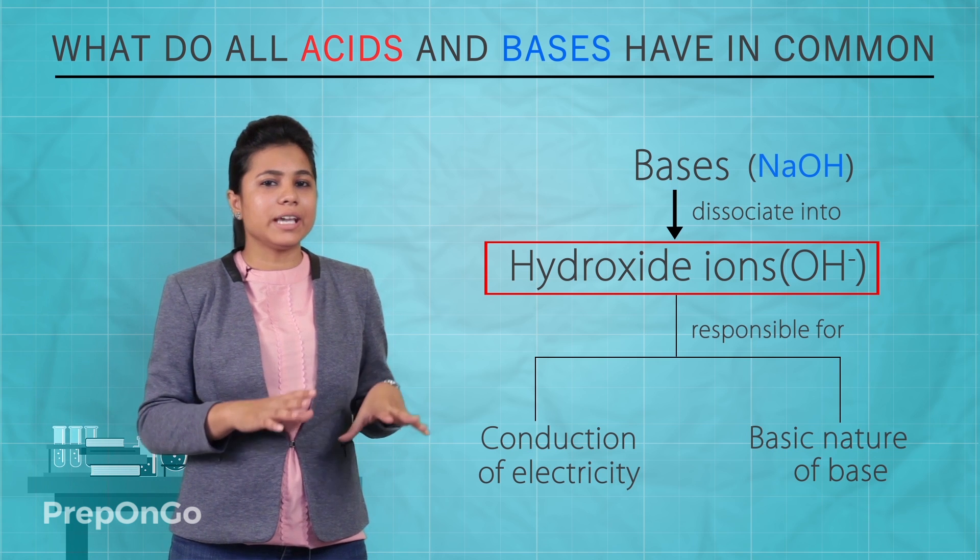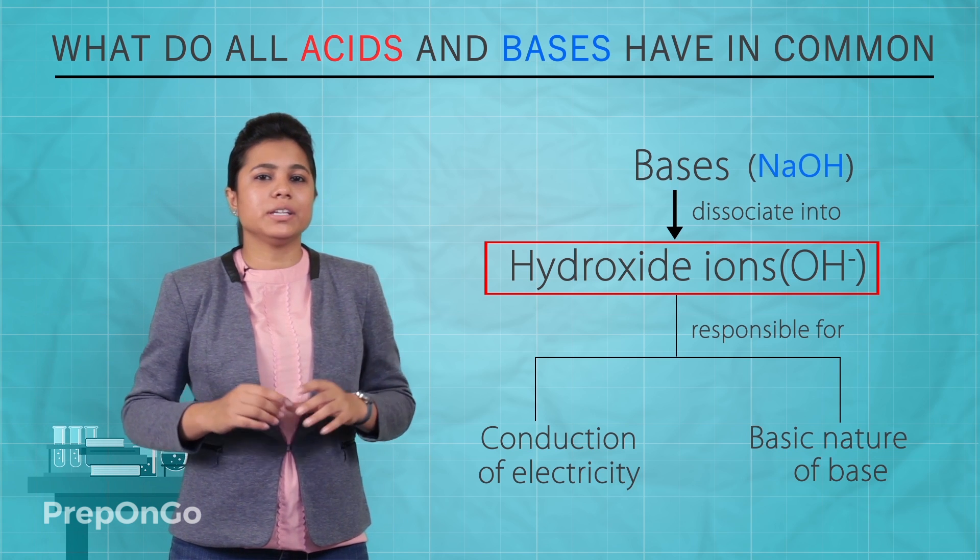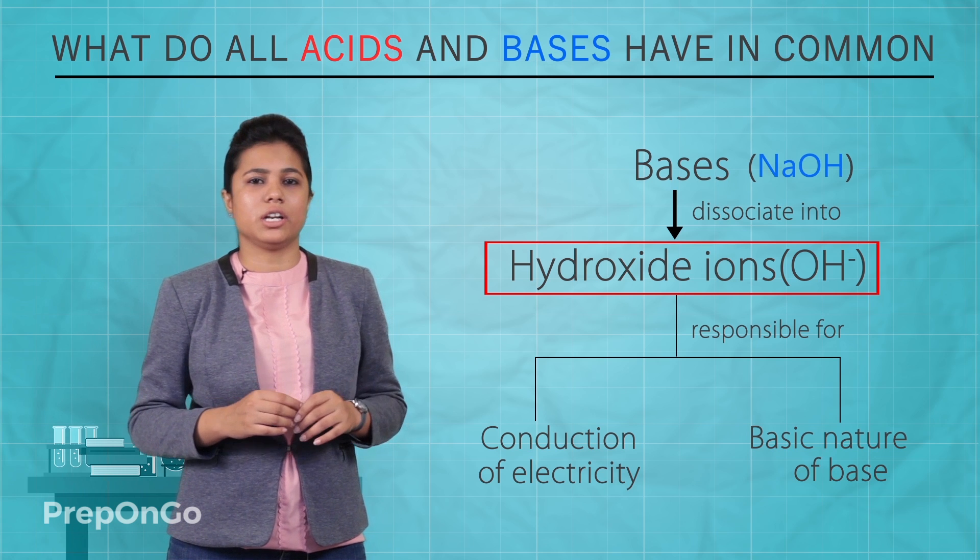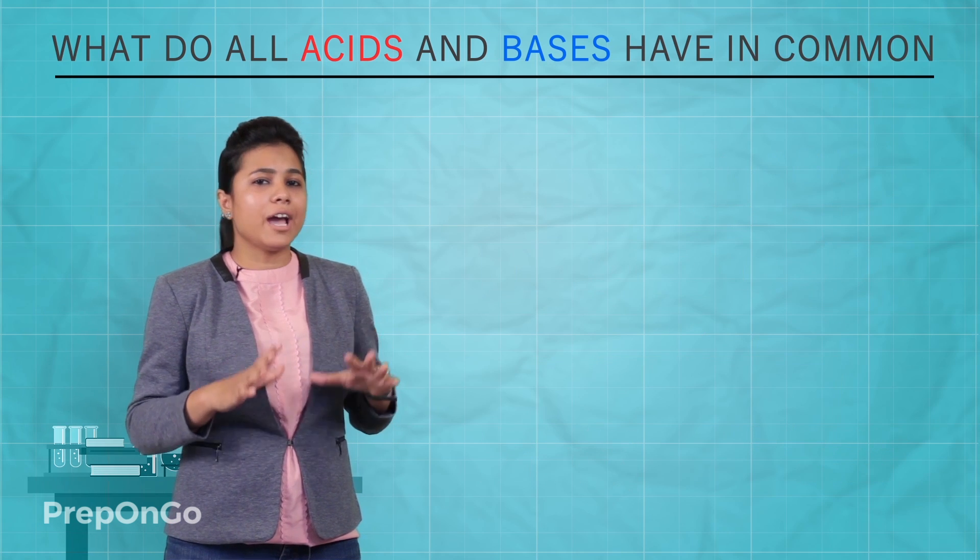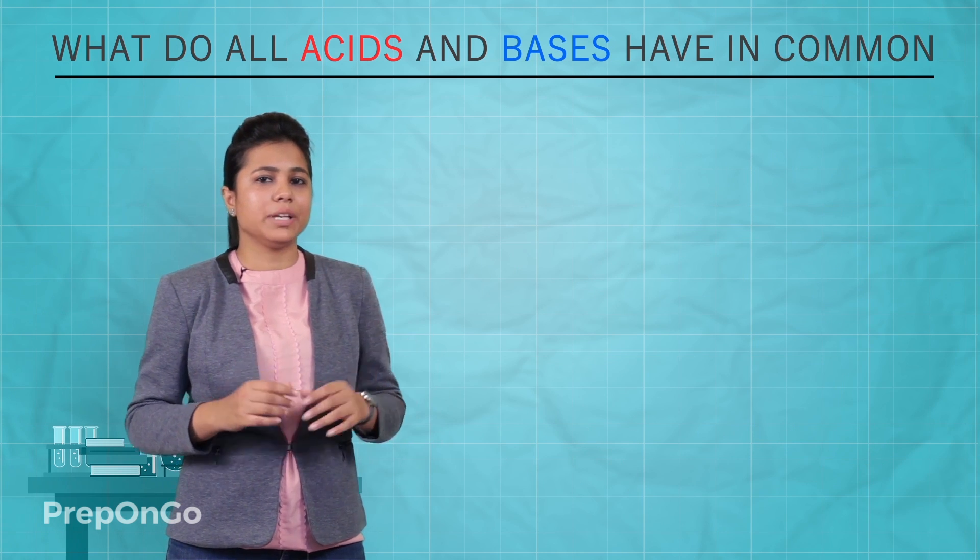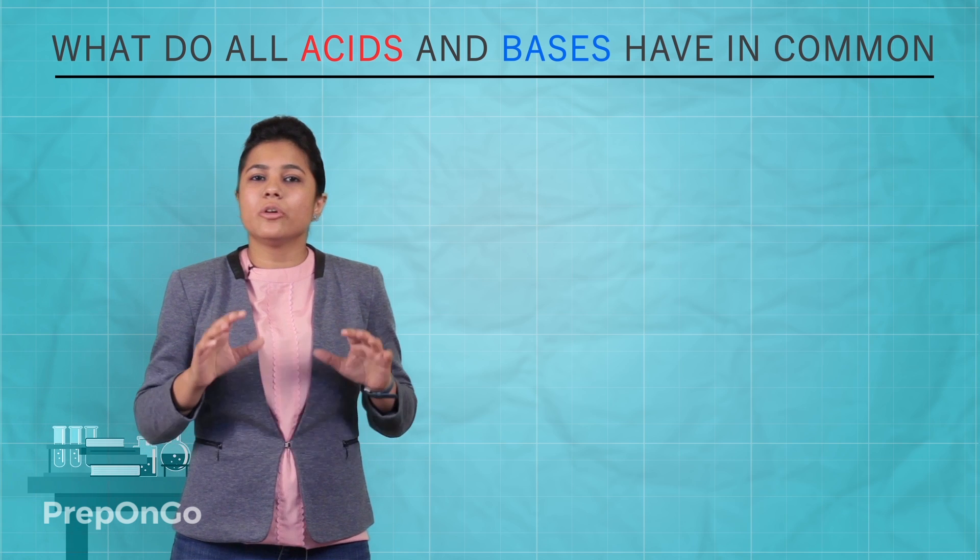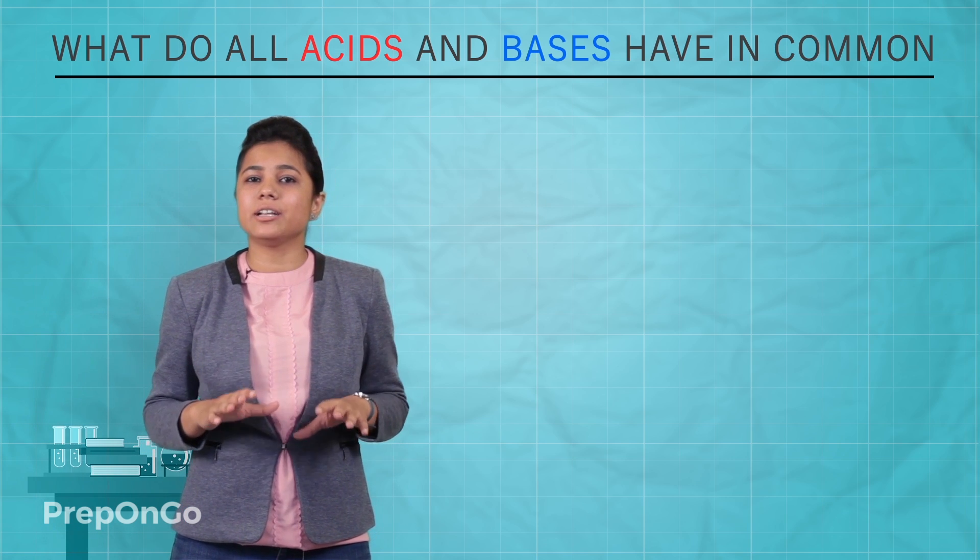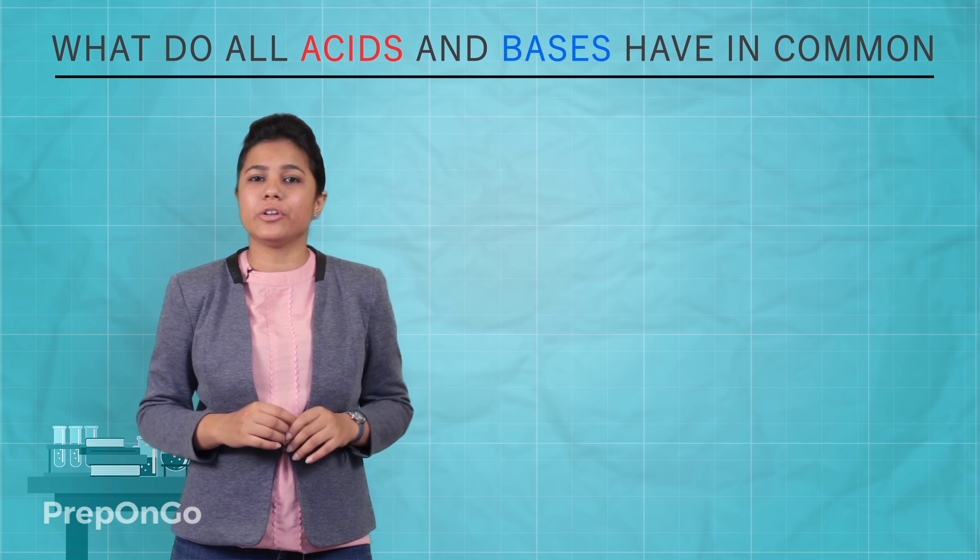So you can say that these acids and bases dissociate into ions to conduct electricity. We have seen how these acids and bases conducted electricity. We are going to see how these acids and bases behave with water in our next video.